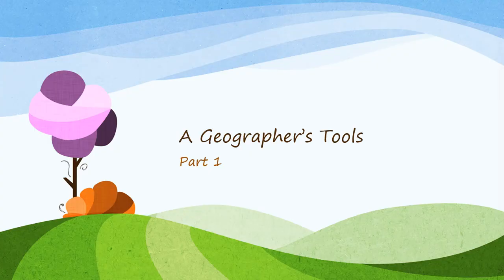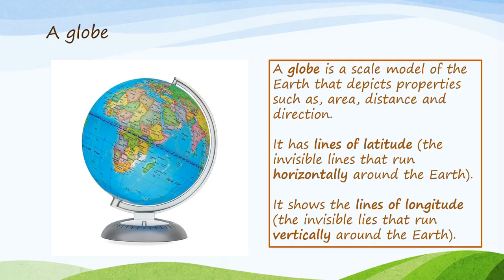A Geographer's Tools, Part 1. A globe is a scale model of the earth that depicts properties such as area, distance and direction. It has lines of latitude, which are the invisible lines that run horizontally around the earth, and it also shows the lines of longitude, which are the invisible lines that run vertically around the earth.